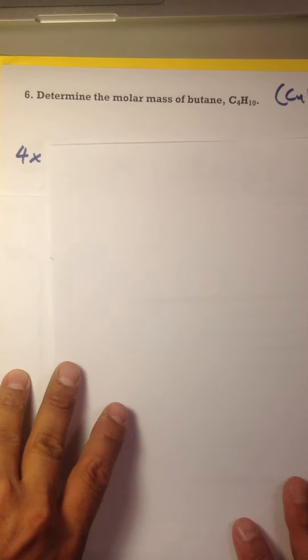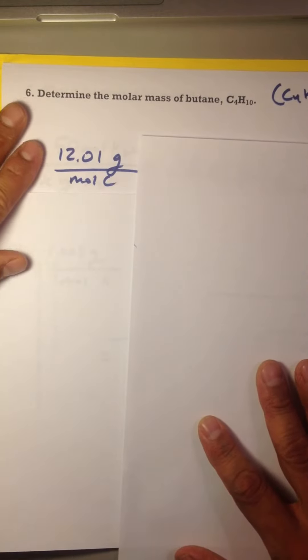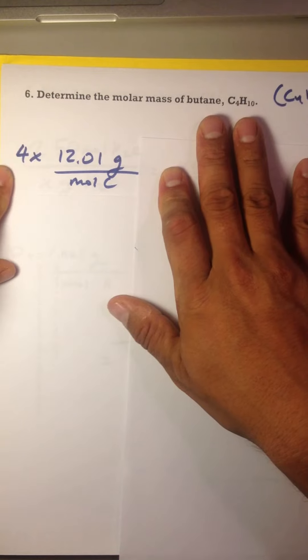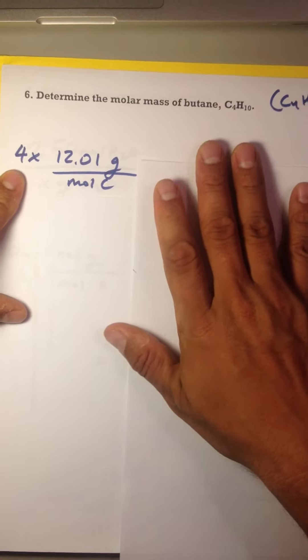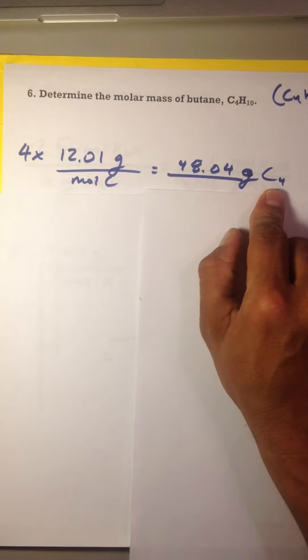So first we need to find - we know the molar mass of one carbon is 12.01 grams. But how many do we have? We got four. So let's multiply that and you're going to get 48.04 grams for that C4 piece.